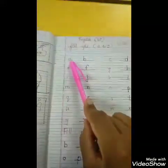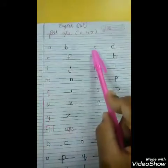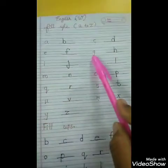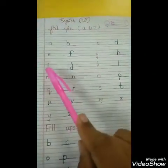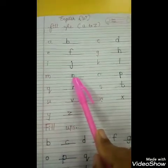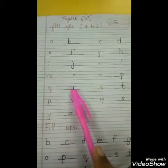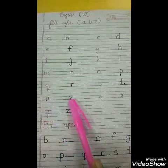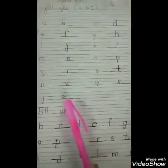O for Orange. Let's speak again — A, B, C, D, E, F, G, H, I, J, K, L, M, N, O, P, Q, R, S, T, U, V, W, X, Y, Z.